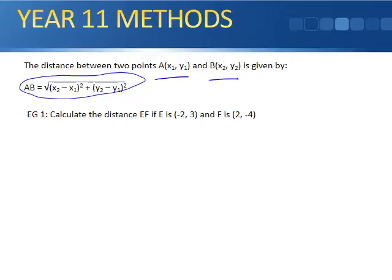Now, for example, the question says calculate the distance EF. That means between point E, which is (-2, 3), and point F, which is (2, -4).